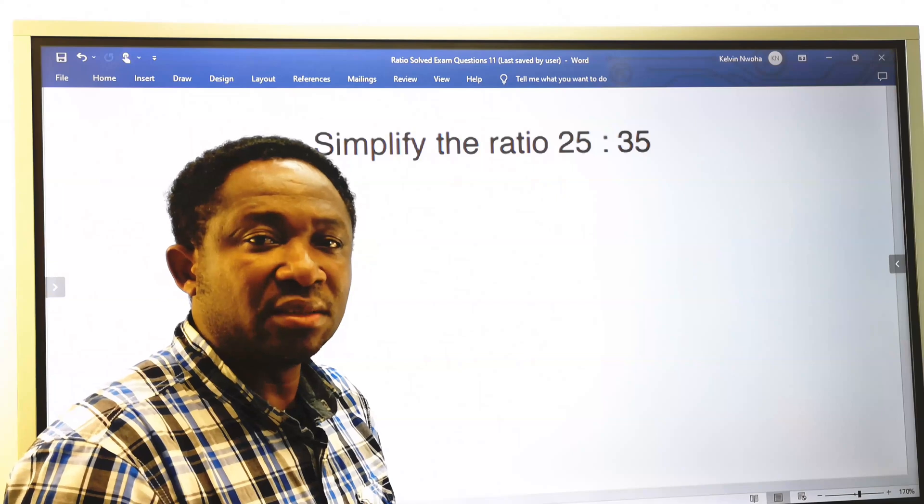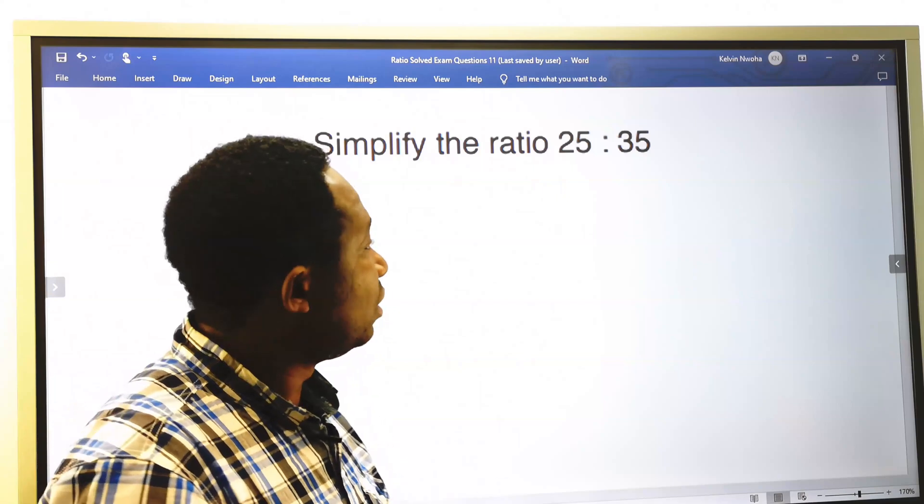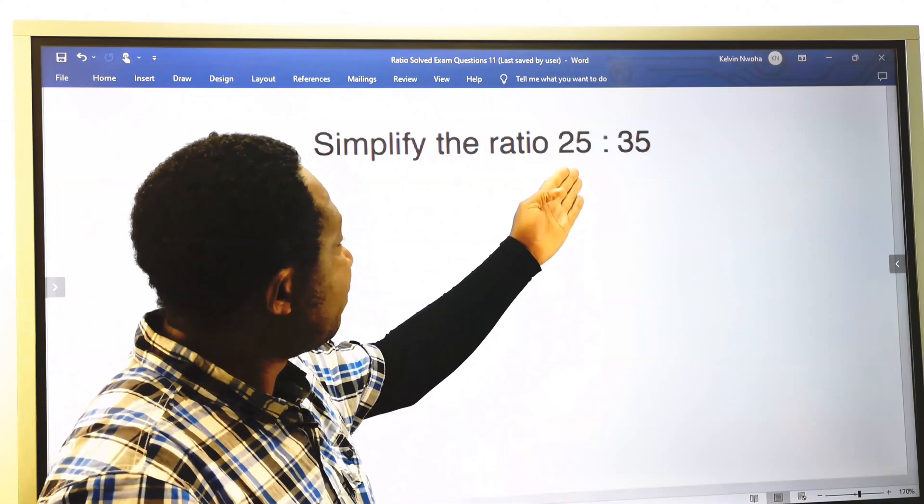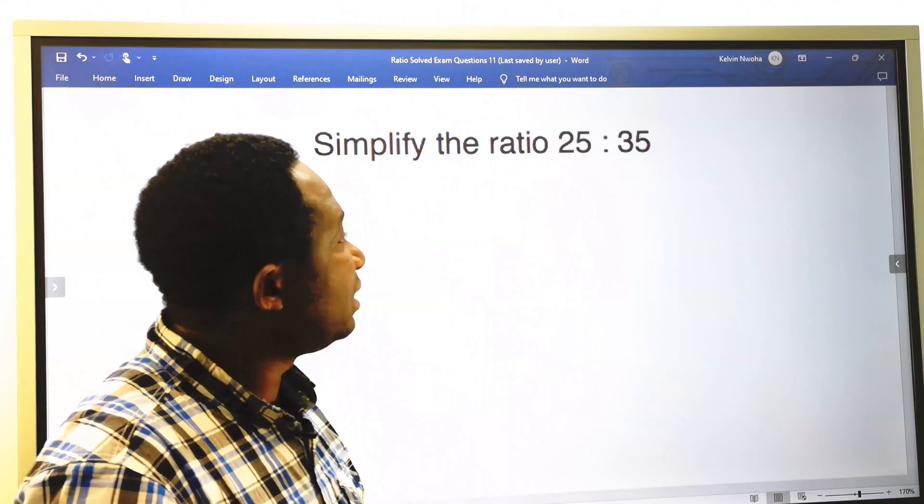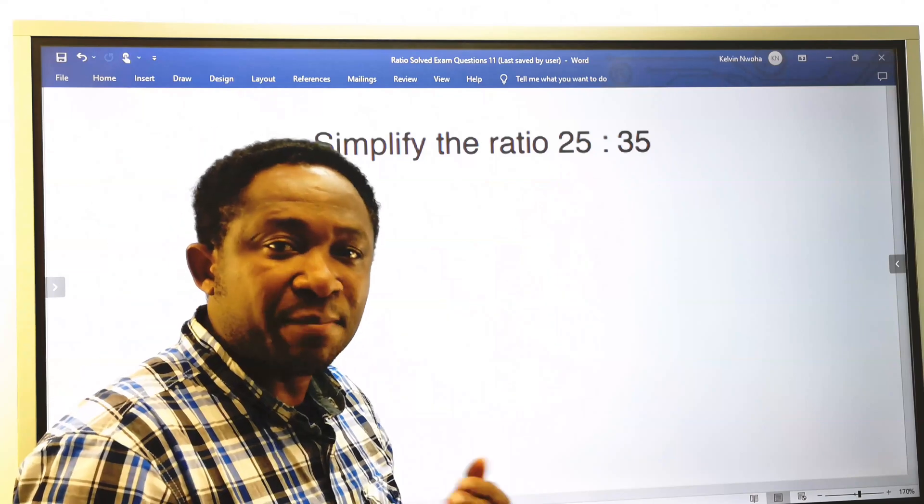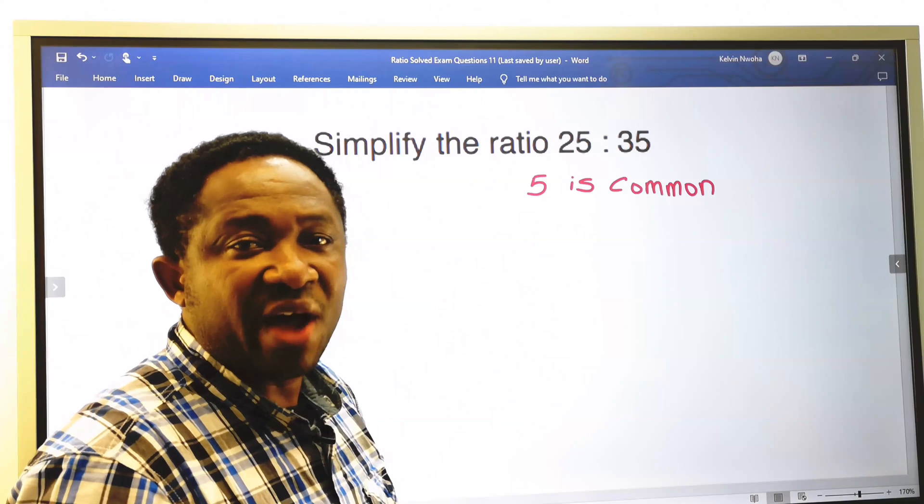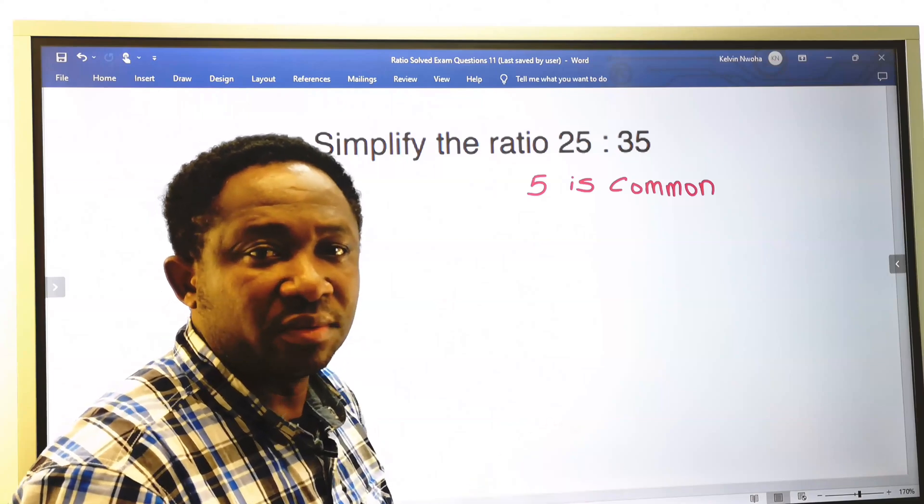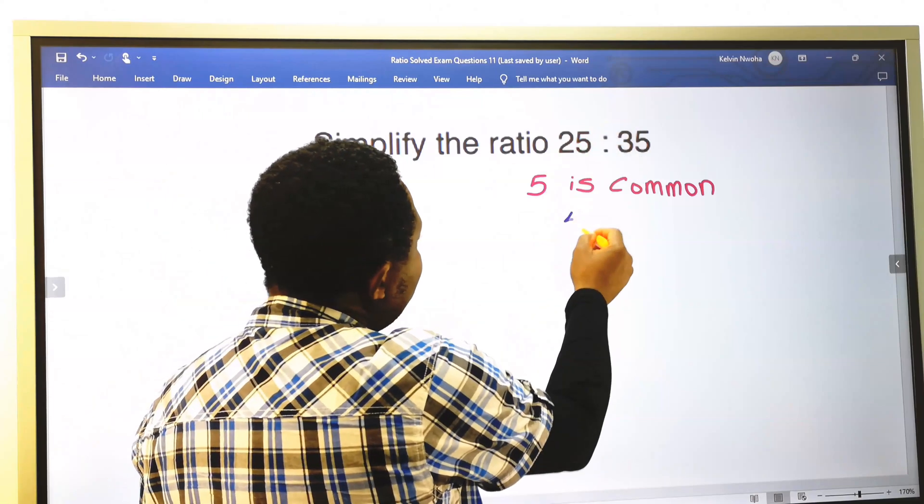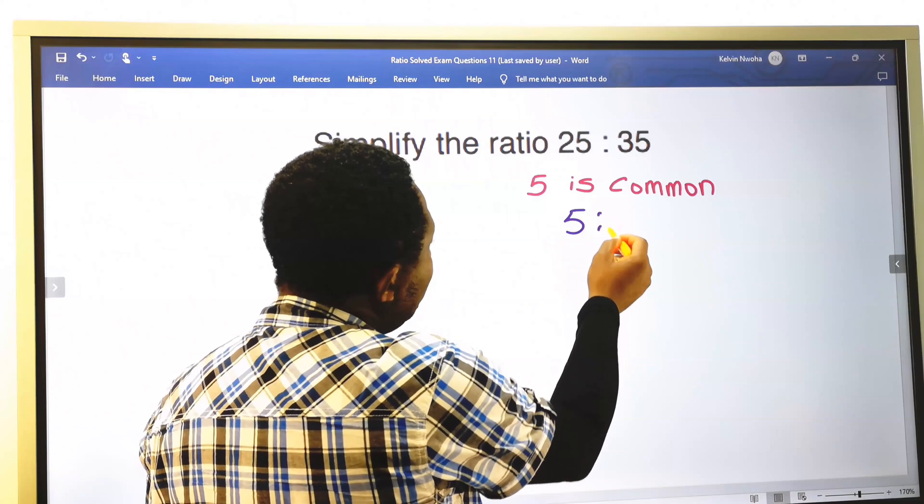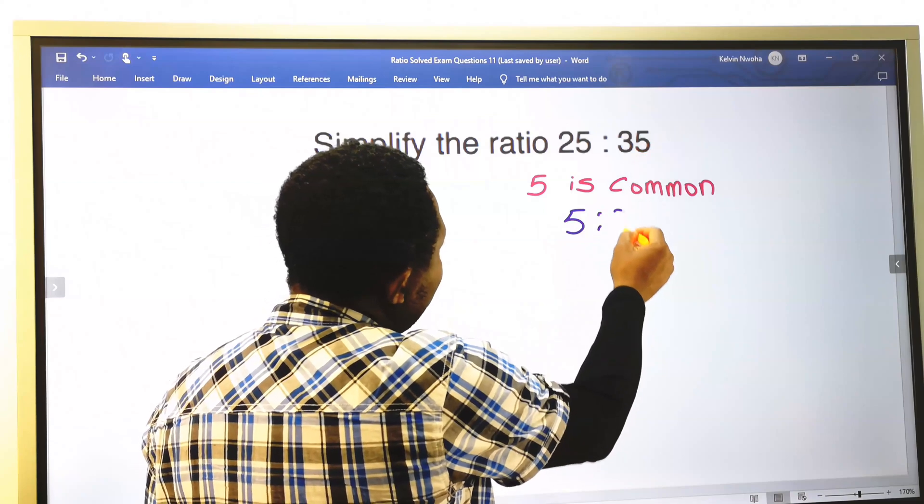Step number 1. What is the common factor that can divide 25 and also divide 35 to their simplest form? 5 is common. 25 divided by 5 gives 5, 35 divided by 5 gives 7.